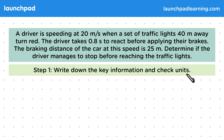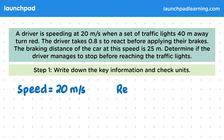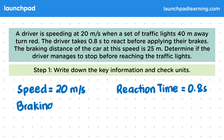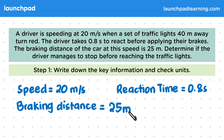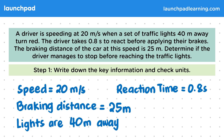We're not told the thinking distance, but we have that the driver's speed is 20 metres per second and their reaction time is 0.8 seconds. We'll be able to use these to calculate the thinking distance in metres. Braking distance is too complicated to calculate at GCSE, so we've been given this directly as 25 metres. Lastly, we're told that the lights are 40 metres away and we need to compare the stopping distance to this value.